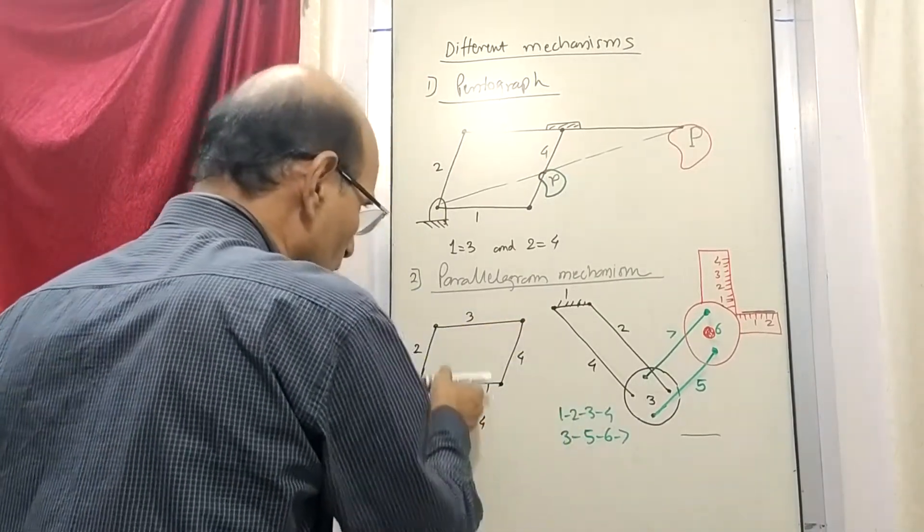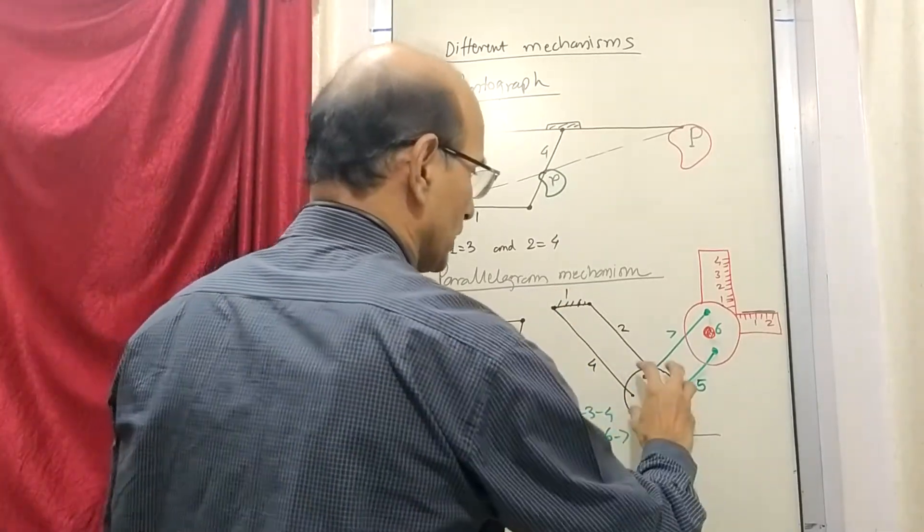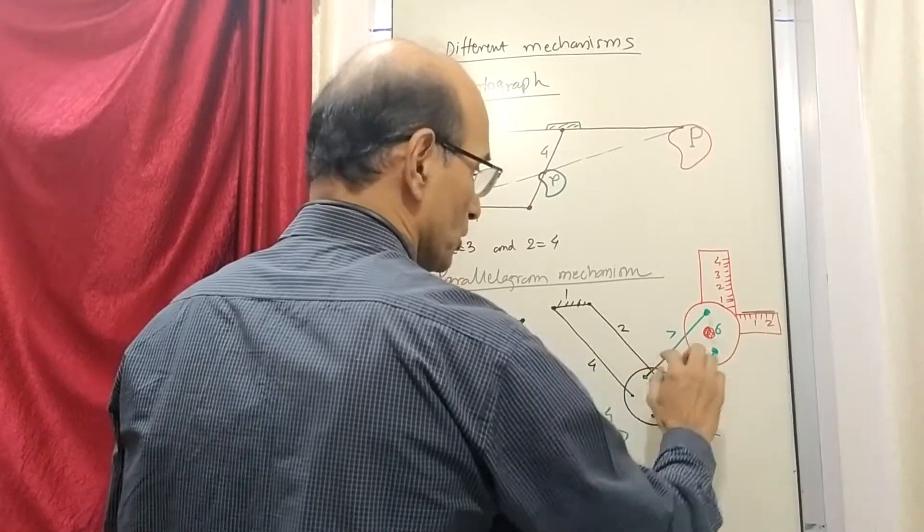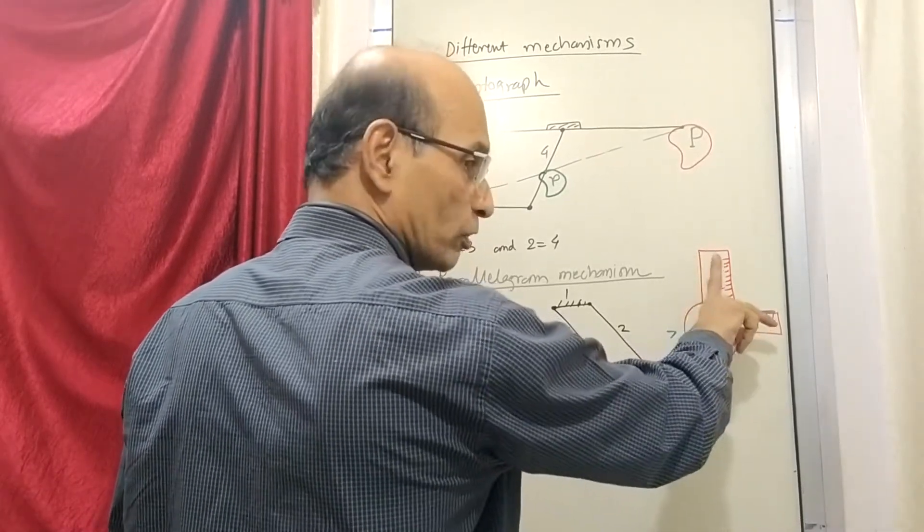It will move anywhere. If you take it will move like this. So here one is like this. This number three, it will rotate like this. It will just move like this. It will not have any rotation. So because of that six also will not have any rotation. So the scale also will not have any rotation.